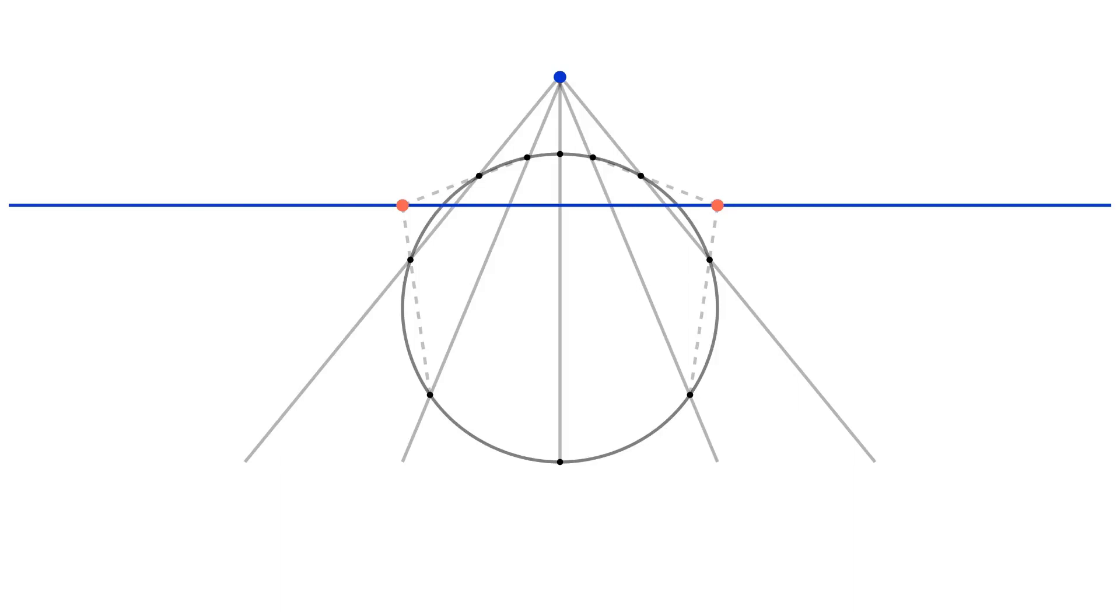It turns out that all those red points will lie on one line. Moreover, the same line will contain intersections of the opposite sides of the quadrilateral we got. We will not prove this fact, but you can find the proof in the video description.